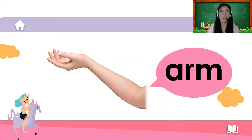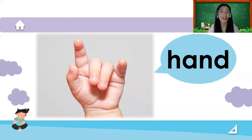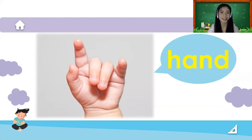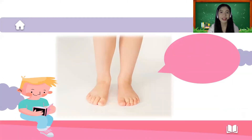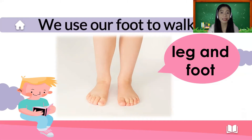Let's spell the word arm: A-R-M. And of course we also have hand. Let's spell the word hand: H-A-N-D. How many hands do you have? One and two — two hands! Next we have our leg and foot. We use our feet to walk. How many feet do we have? We have two feet.